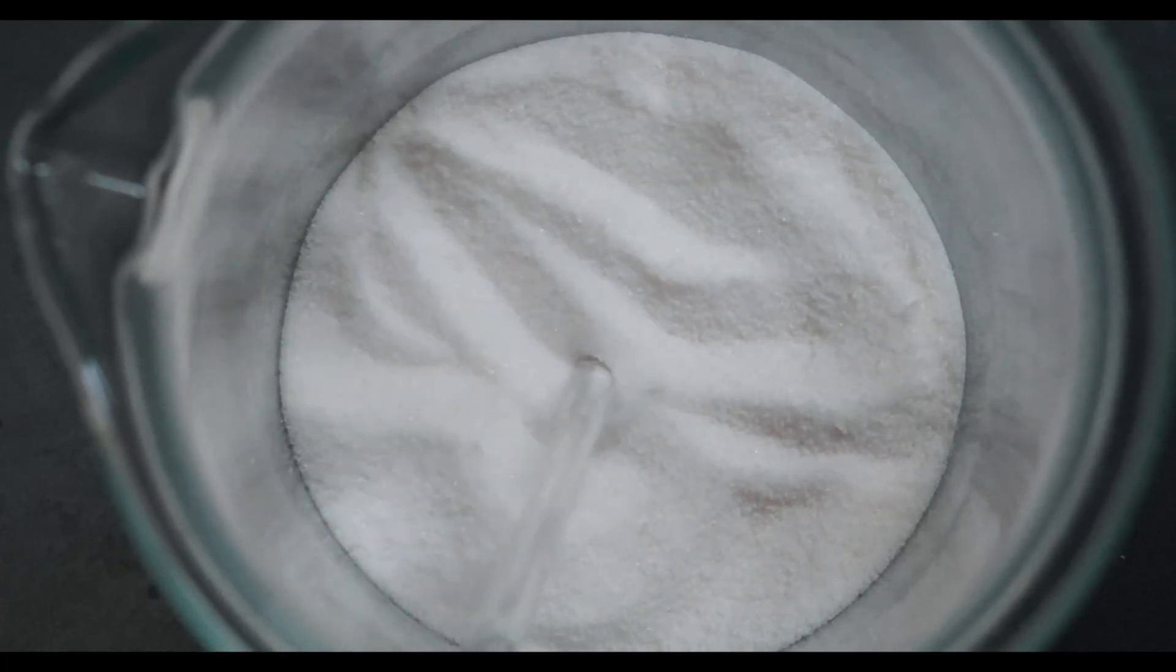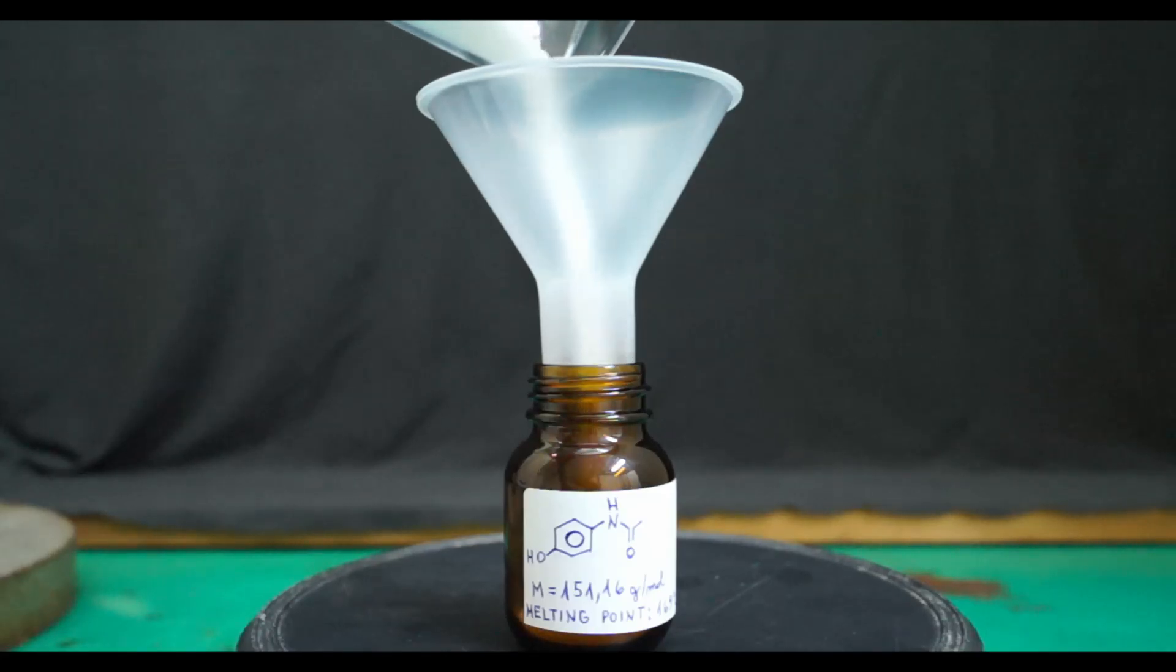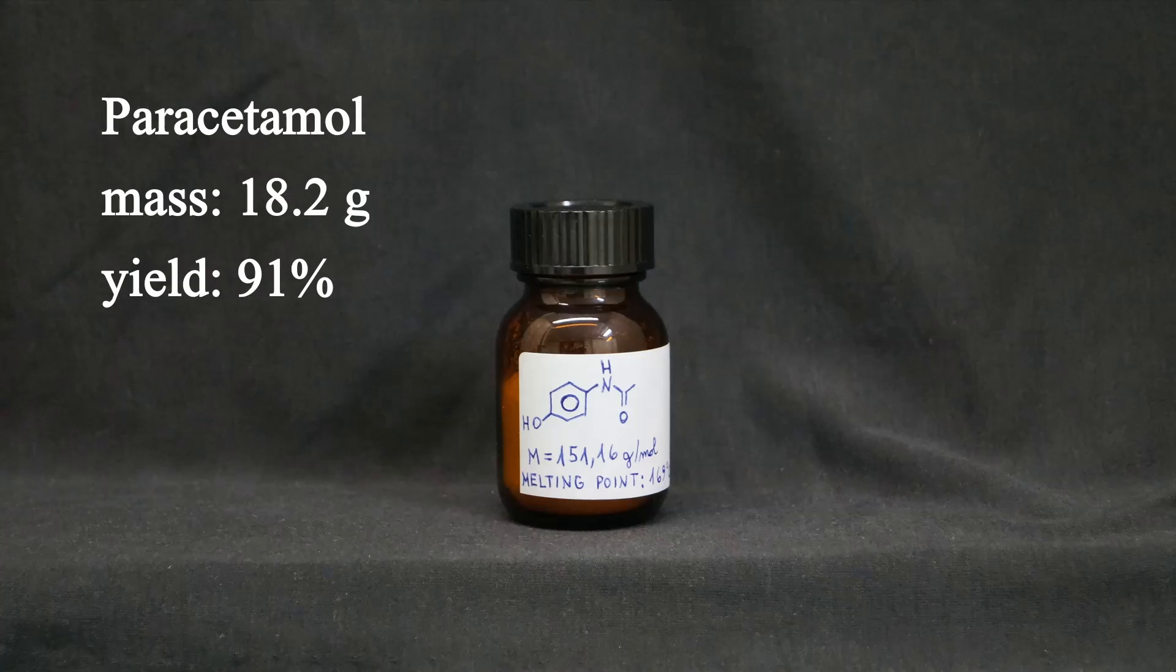After 2 days I was left with a nice almost white crystalline powder. I transferred the product into a pre-weighed amber glass storage bottle. I got 18.2g of paracetamol. This represents a 91% yield.